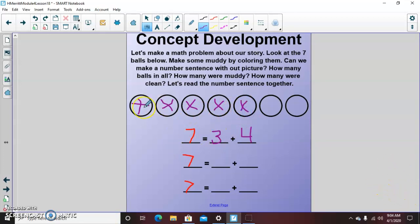Let's see how many muddy ones we have now. One, two, three, four, five. So seven equals how many muddy? Five. Plus how many aren't muddy over here? Two. Very good. So seven equals five plus two. Put up five on one hand. Put up two on the other. One, two, three, four, five, six, seven. Great job.